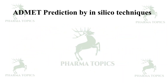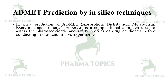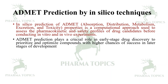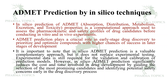ADMET prediction by using in silico techniques: in silico prediction of absorption, distribution, metabolism, excretion, and toxicity properties is a computational approach used to assess the pharmacokinetic and safety profiles of drug candidates before conducting in vitro and in vivo experiments. ADMET prediction is very crucial as it produces higher chances of success in later stages of drug development. It is important to note that in silico ADMET prediction is not a confirmation — it significantly reduces cost and time but must be validated by experimental models.